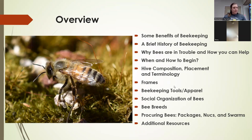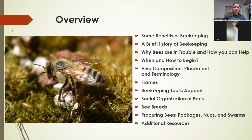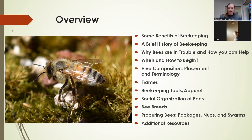Frames is a separate category because it's easier to separate them — there's a lot to go over there and it can get confusing. We'll also cover beekeeping tools and apparel, specifically the things you absolutely need versus the things that will make your life easier. Social organization of bees — which bees are drones, which are workers, what do they do, and what does the queen do inside the hive. Bee breeds, procuring nukes, packages and swarms, and additional resources.